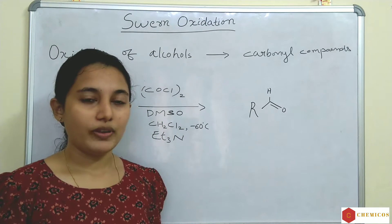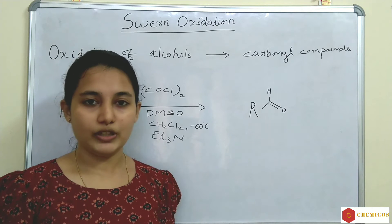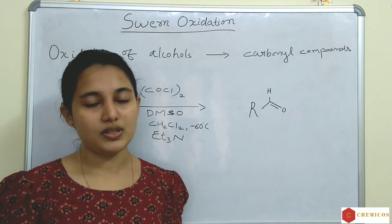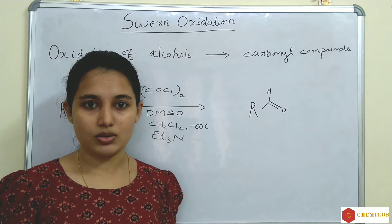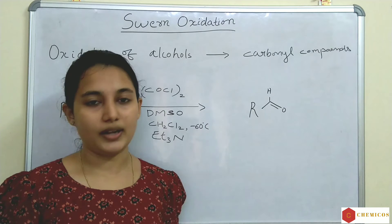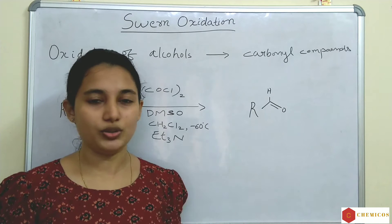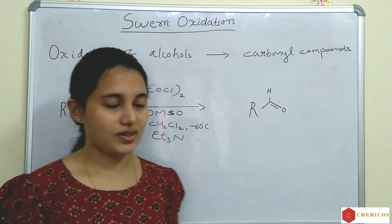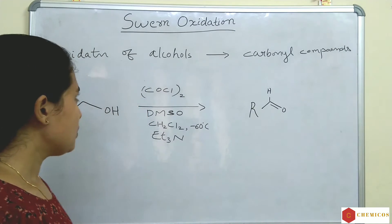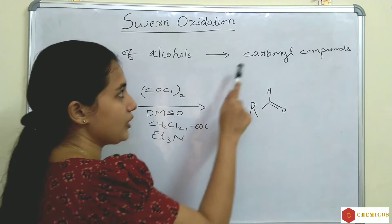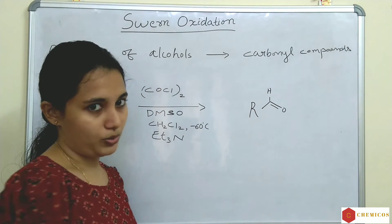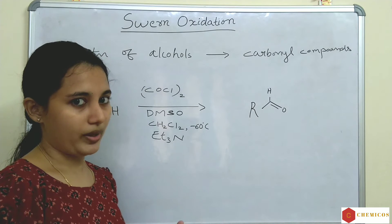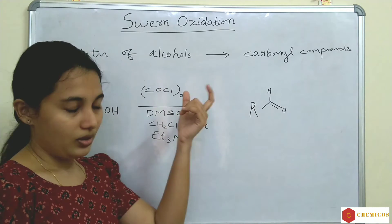When we oxidize an alcohol, we know primary alcohol gives aldehyde, secondary alcohol gives ketone, and tertiary alcohol usually doesn't react with oxidizing agents. So oxidation of alcohols to carbonyl compounds is known as Swern Oxidation.